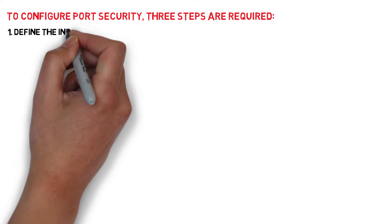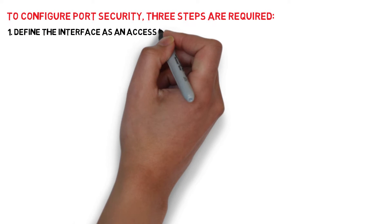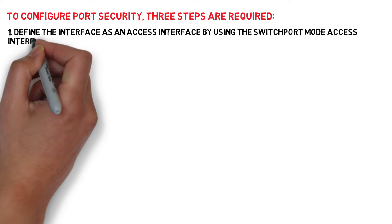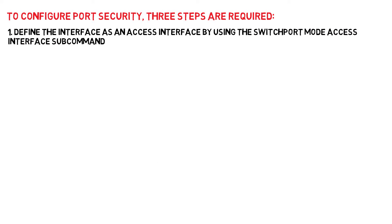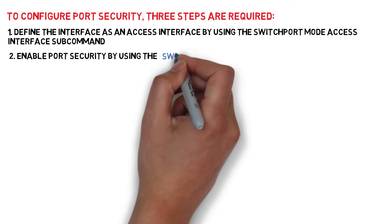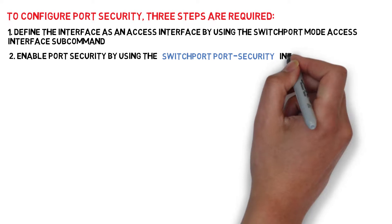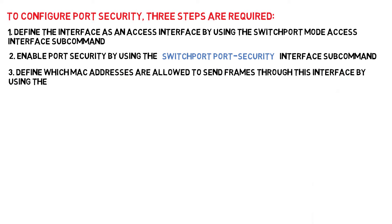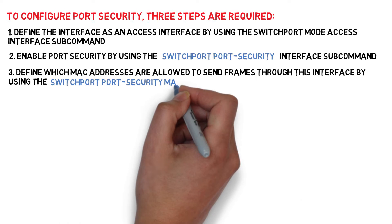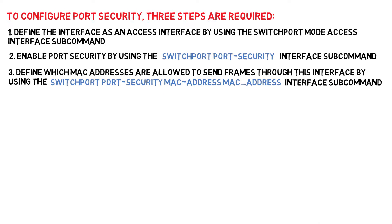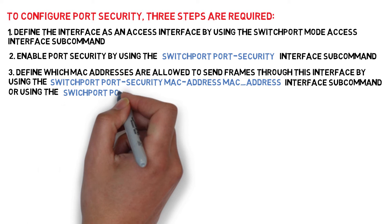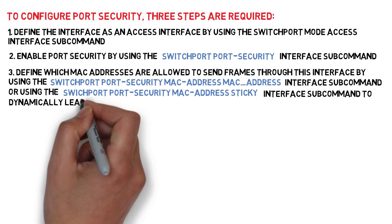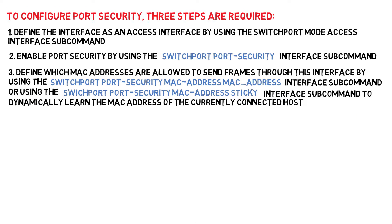To configure port security, three steps are required. 1. Define the interface as an access interface by using the 'switchport mode access' interface subcommand. 2. Enable port security by using the 'switchport port-security' interface subcommand. 3. Define which MAC addresses are allowed to send frames through this interface by using the 'switchport port-security mac-address MAC_ADDRESS' interface subcommand, or use 'switchport port-security mac-address sticky' to dynamically learn the MAC address of the currently connected host.